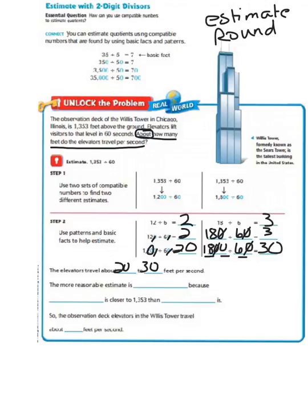The more reasonable estimate is 1,200 divided by 60 equals 20, because 1,200 is closer to 1,353 than 1,800 is. So the observation deck elevators in the Willis Tower travel about 20 feet per second.